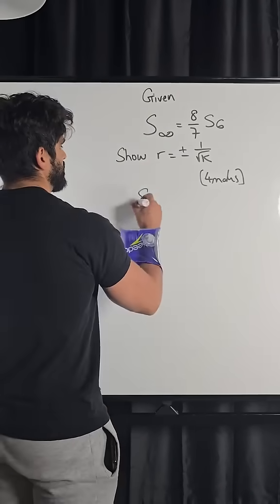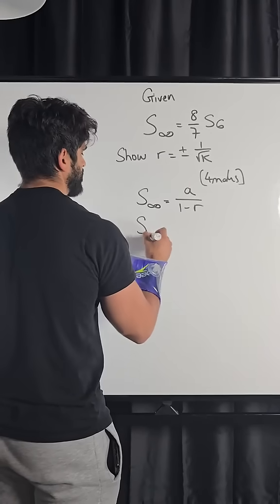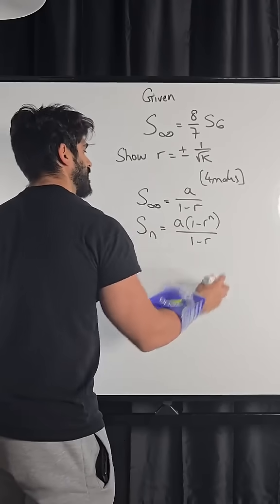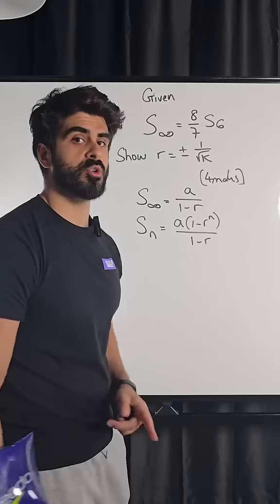Now sum to infinity is a over one minus r. Now Sn is a one minus r to the power of n all over one minus r. I don't want you guys to think of this formula like this with a question like this, because there's something really cool we can do.